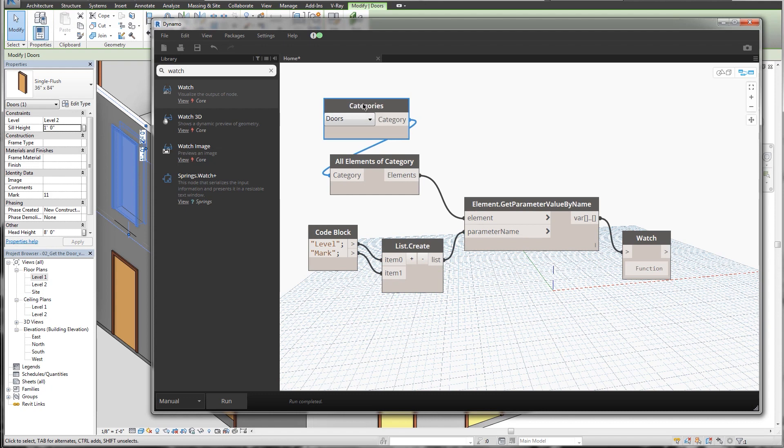And that's going to tell Dynamo to search all the doors, because remember we're using element by category, and it's going to say search for all the doors. I want you to search for the level and then I want you to search for their mark.